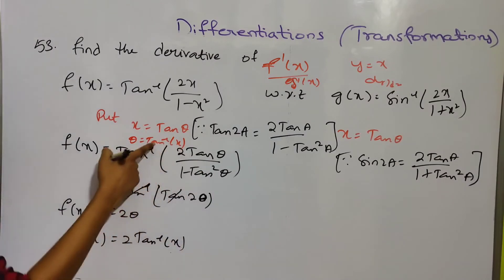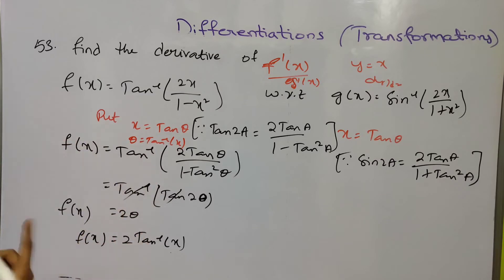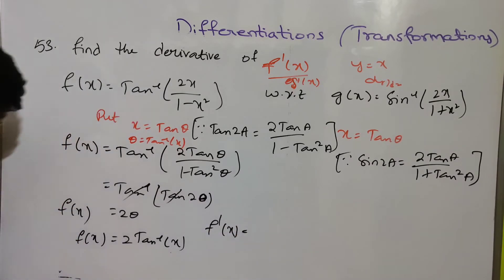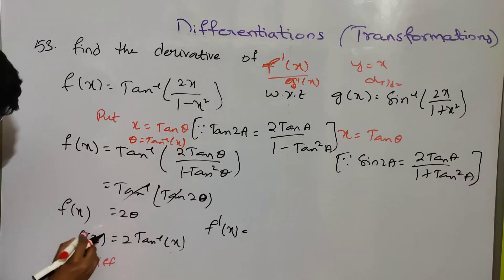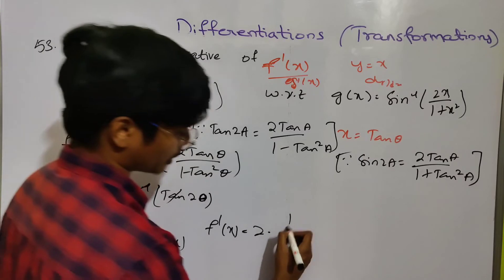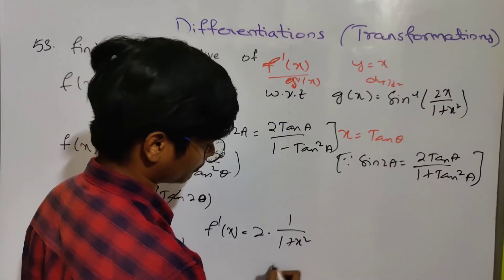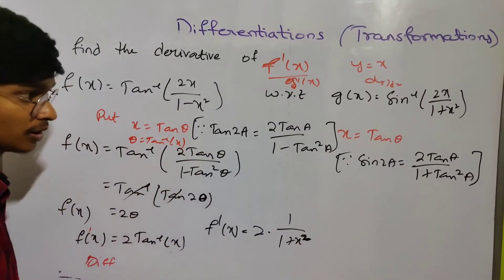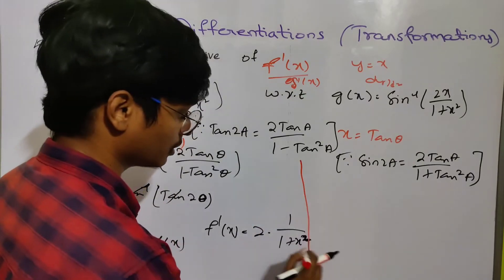f(x) is equal to 2 tan⁻¹x. Now see what the derivative is. f'(x) equals 2 into d/dx of tan⁻¹x, which is 1 by 1 plus x squared. So f'(x) = 2 by 1 plus x squared.